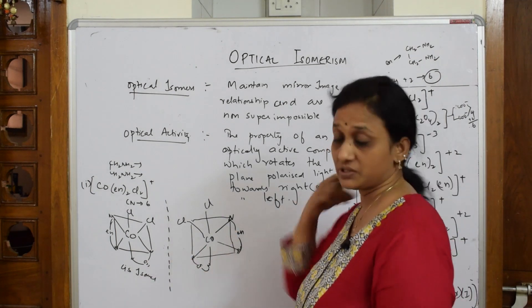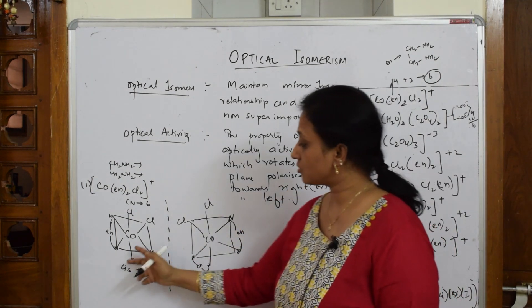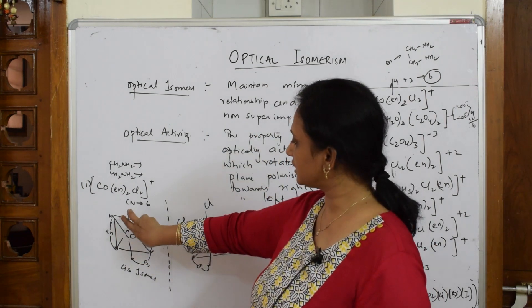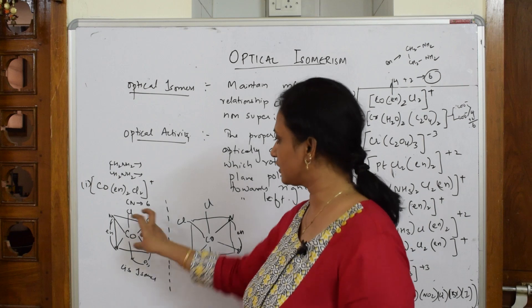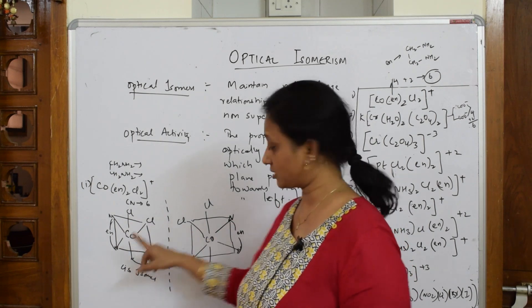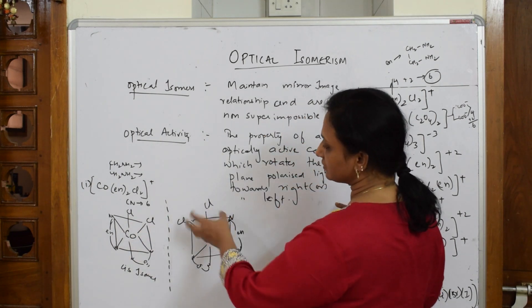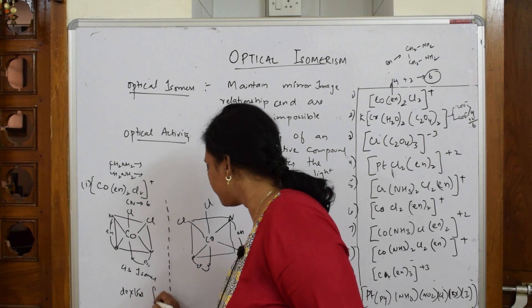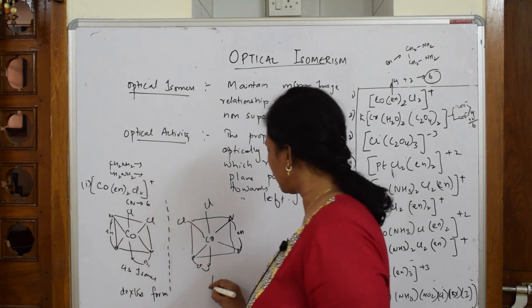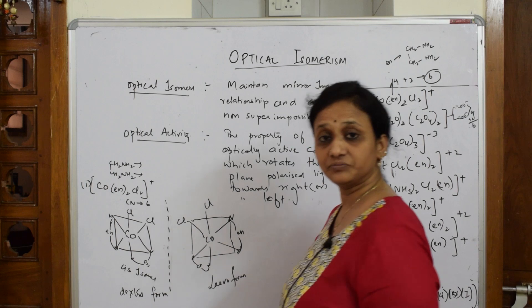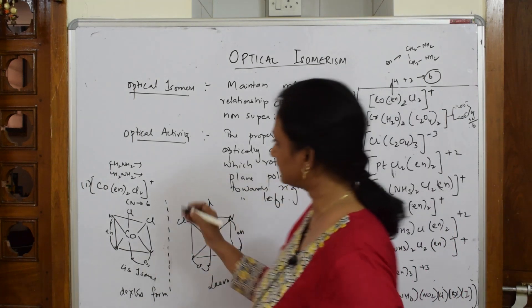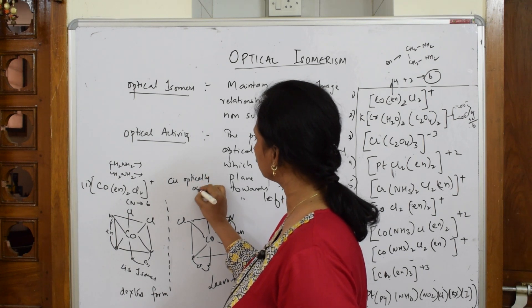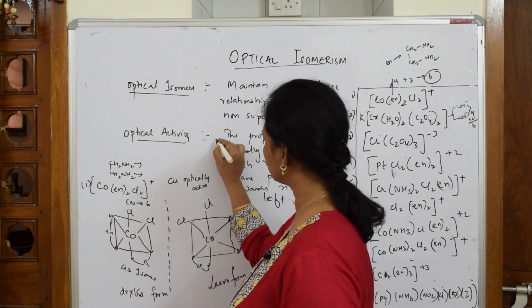Both are mirror images. Now important thing is, suppose if I draw the trans isomer of this - now are these two optically active? Yes, because it is rotating the plane polarized light towards right. Look here, this is going in this direction - dextrorotatory. Now here what happened? It is rotating in this direction - levorotatory. Dextro form and levo form. Done. So cis isomer is always - cis is optically active, optically active.